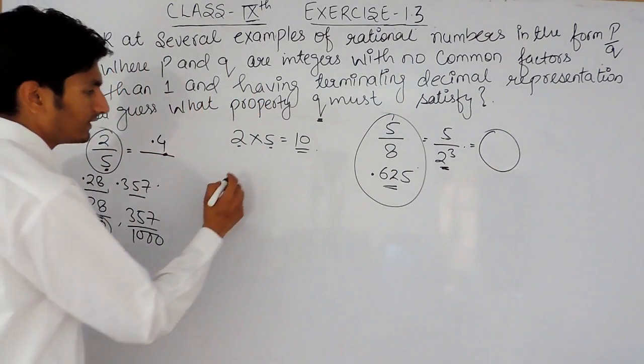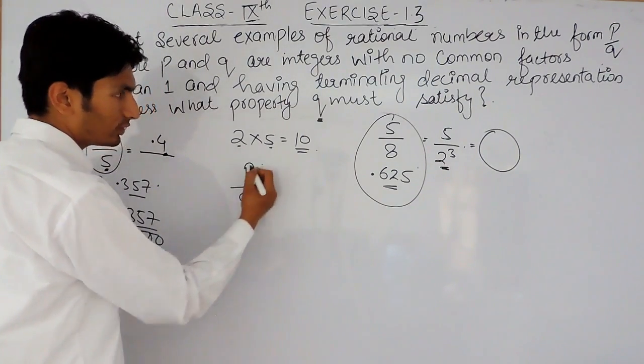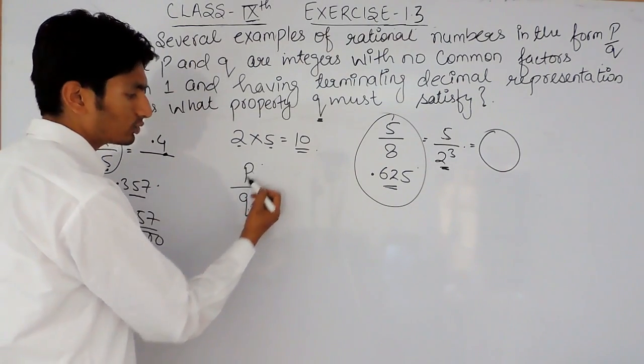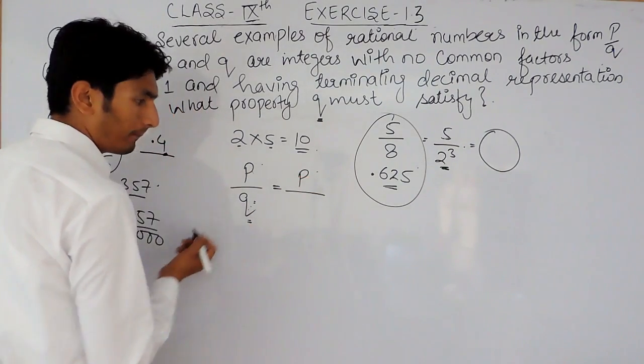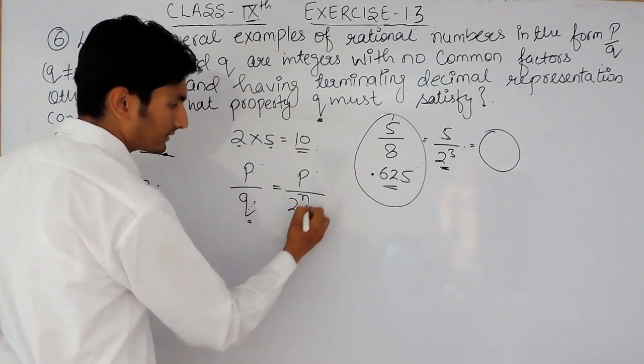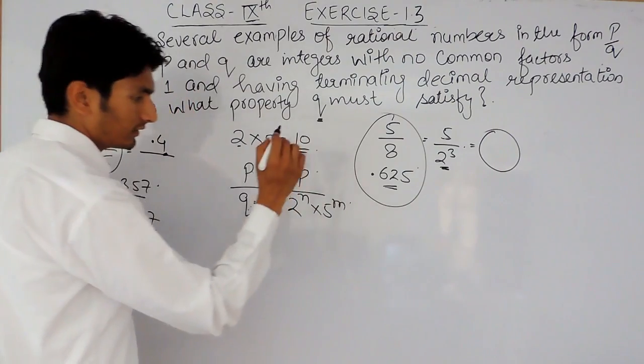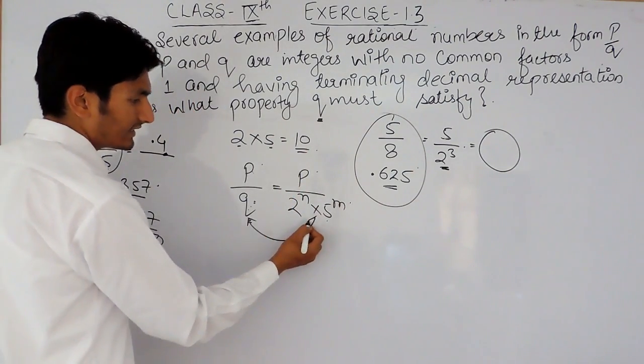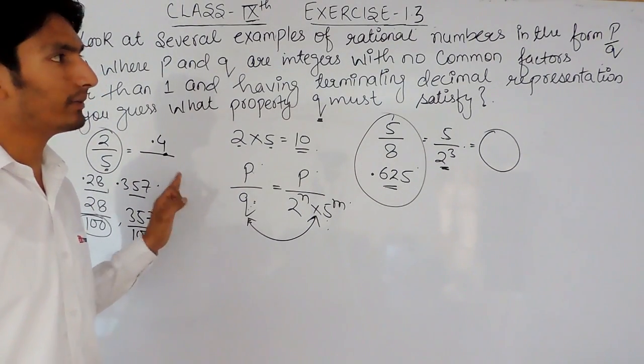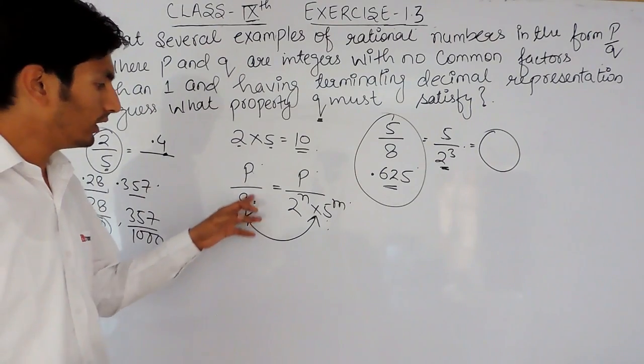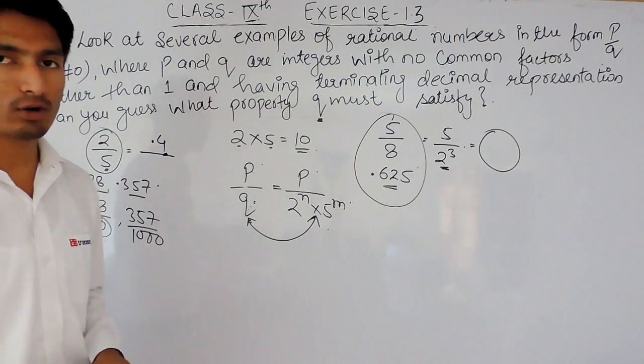So we can say that if there is an expression in the form of P upon Q, where P and Q are integers and the common factor of these two is 1, then Q must be equal to 2 raised to power something multiplied by 5 raised to power something. So it must satisfy this condition. Then only it will be terminating decimals. Q must be the multiplication of the power of 2 and the power of 5.